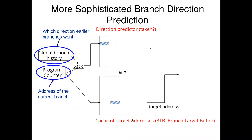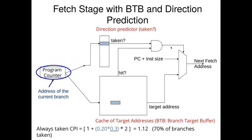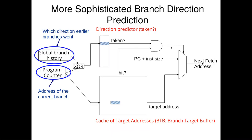As a preview, we'll eventually add additional context like total history of where branches have gone — keeping track of the last five branches to see if they were taken or not taken. We'll combine that information with our program counter to determine whether the next branch is taken or not. This will be more complicated to deal with.